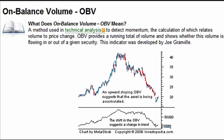So the On Balance Volume — what does it do, what does it mean? It's supposed to be a momentum detector, and it's a calculation which relates volume to price change. We want to see OBV go up if we want to be buyers, and once it starts going down, we should start to worry about being sellers or consider exiting a position. OBV up is positive, OBV down is negative, and we want to also look for divergences — so when OBV is going up while price is going down, that should be a warning.